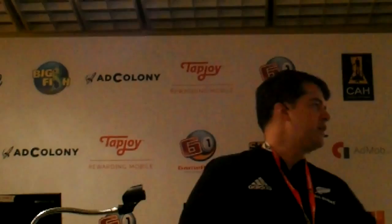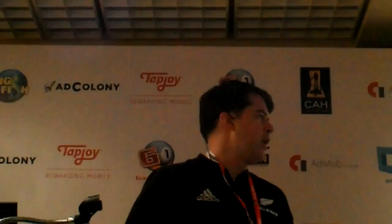You want to subtly guide them to the cool stuff. Free will is a challenge, but it comes with the territory. You want to rely on the senses — sight and sound. These are things we've already used for level design if you've done any first-person shooters. You want to herd them to the more interesting places. We used lights — very well-lit areas, light bulbs as point flares, kind of a trail of breadcrumbs to lead them to places. Darker areas were less interesting. We also used audio — sparse ambient tracks in less interesting places, and more diverse and complex sounds in areas that were more active. Use reverb, use any audio tools you've got. We also had audio clues to lead them to active story areas, and we would highlight objects to show that they trigger stories. You have to tell them: touch here, don't touch here.